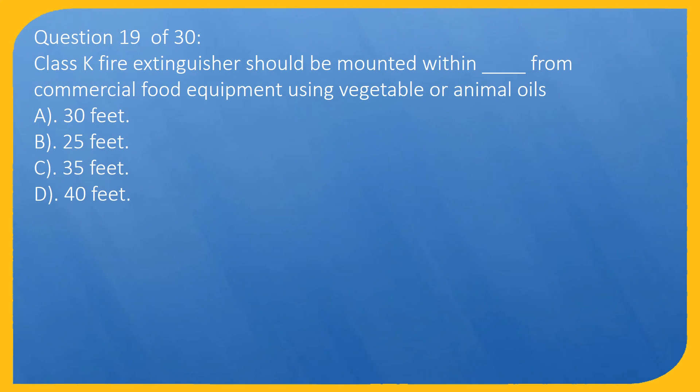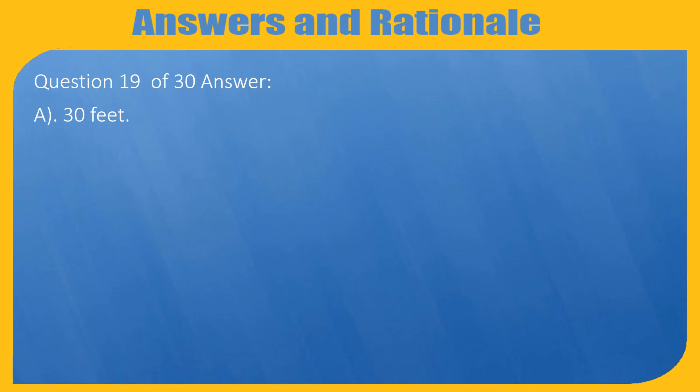Question 19 of 30: Class K fire extinguisher should be mounted within what distance from commercial food equipment using vegetable or animal oils? A. 30 feet, B. 25 feet, C. 35 feet, D. 40 feet. Answer: A. 30 feet.